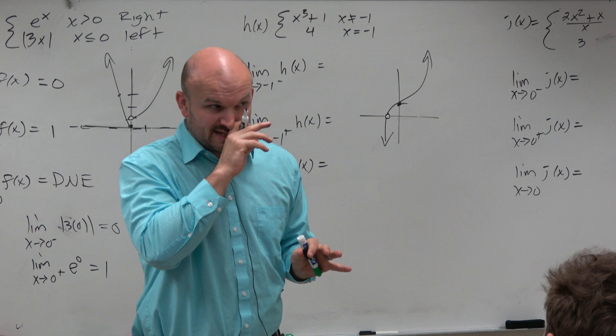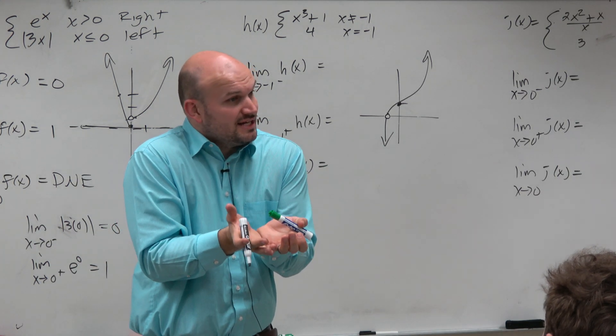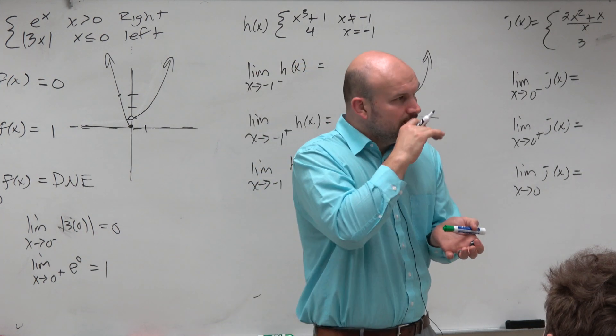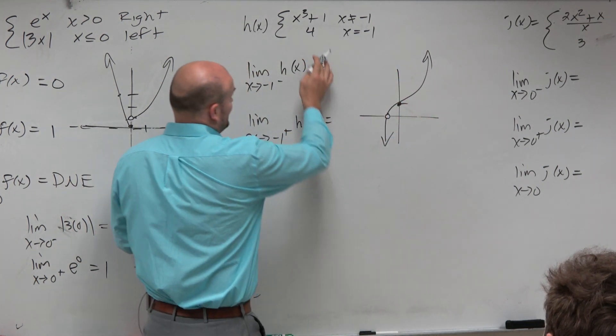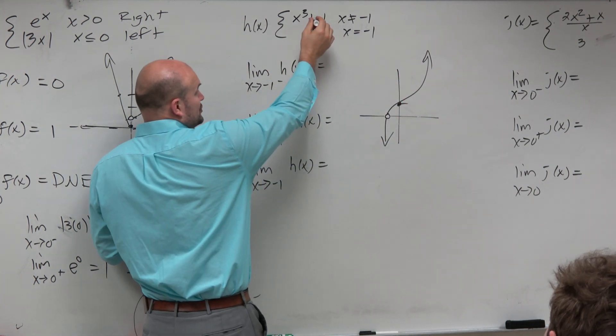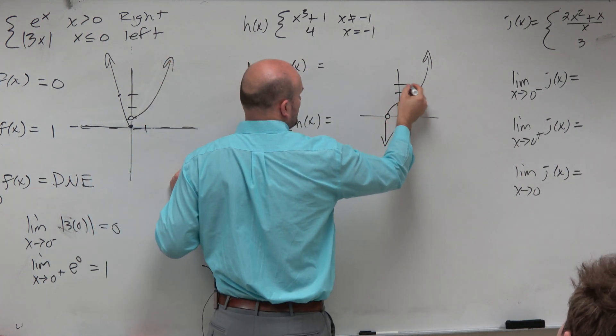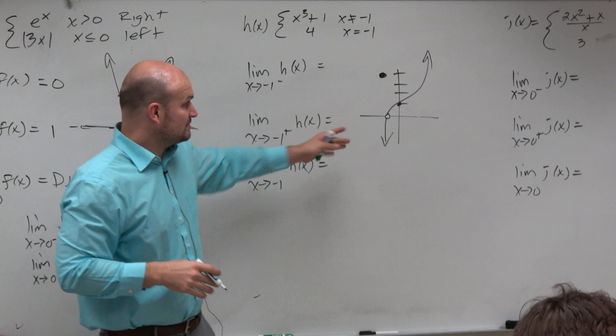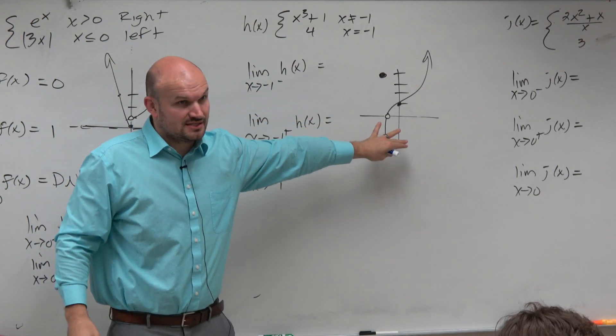But regardless, the important thing is, what is the value at negative 1? There's a hole at negative 1, so it doesn't equal that value. But what is that value? Because it's saying it can't be true at negative 1 because it equals 4. So the graph looks something like this. That's what this graph tells us, right?